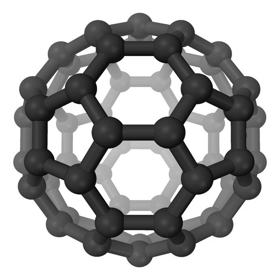Titan tholins are nitrogen-rich organic substances produced by the irradiation of the gaseous mixtures of nitrogen and methane found in the atmosphere and surface of Titan. Titan's atmosphere is about 97% nitrogen, 2.7% ± 0.1% methane, and the remaining trace amounts of other gases. The haze and orange-red color of Titan's atmosphere is thought to be caused by the presence of tholins.